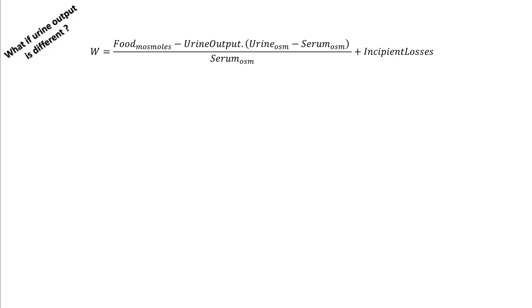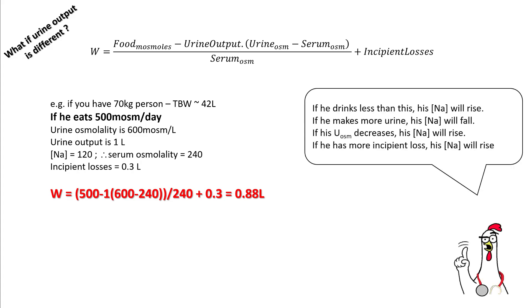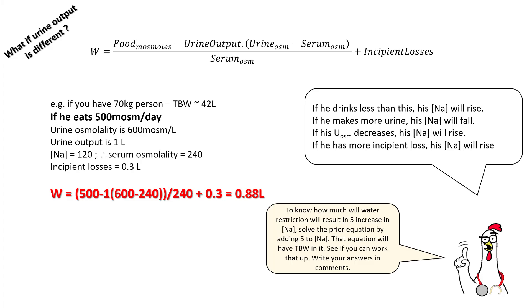What if urine output differs from water intake? Going back to the full equation: a 70-kg person eats 500 mOsm/day, urine osmolality is 600, urine output is 1 liter, sodium is 120 (serum osmolality 240), and insensible losses are 0.3 liters — the calculation gives 0.88 liters. If he drinks less than 0.88 liters, sodium will rise; if he makes more urine, sodium will fall; if urine osmolality decreases, sodium rises; if insensible losses increase, sodium rises. Try deriving the equation that yields a 5 mEq/L sodium increase — solve the prior equation by adding 5 to the sodium, which will include total body water, and post your answer in the comments.